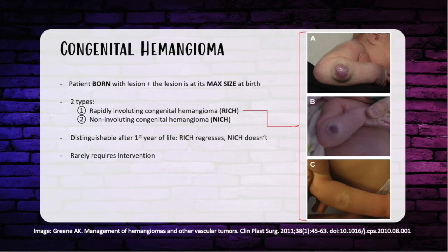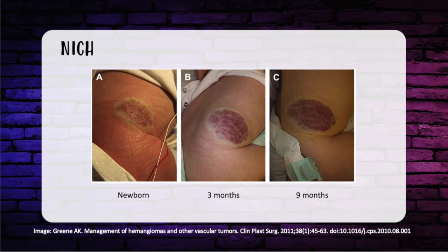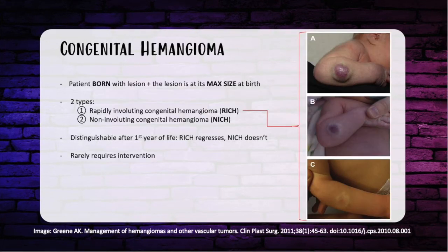Moving on to congenital hemangiomas — unlike infantile hemangiomas, the patient is born with this lesion at its maximum size. There are two types: rapidly involuting congenital hemangioma (RICH), which completely disappears quickly, and non-involuting congenital hemangioma (NICH), which doesn't disappear by age one. The only way to distinguish them is to wait until the child turns one. Both are GLUT1 negative, unlike infantile hemangiomas. This lesion is more common in the head, neck, and limbs, with a one-to-one male-to-female ratio, and these rarely require intervention.